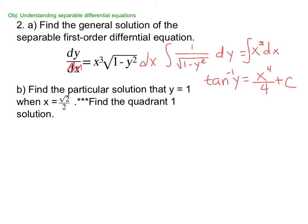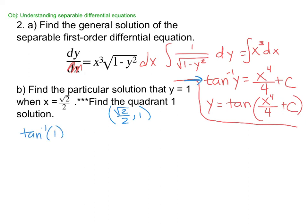You could also, to solve for y, do just tan of both sides. So I would say the general solution is tan of (x⁴ over 4 plus C). It looks a little nicer. So that's my general solution. Now for the particular solution, we're going to plug in. They gave me √2/2 comma 1. And it's in quadrant 1.